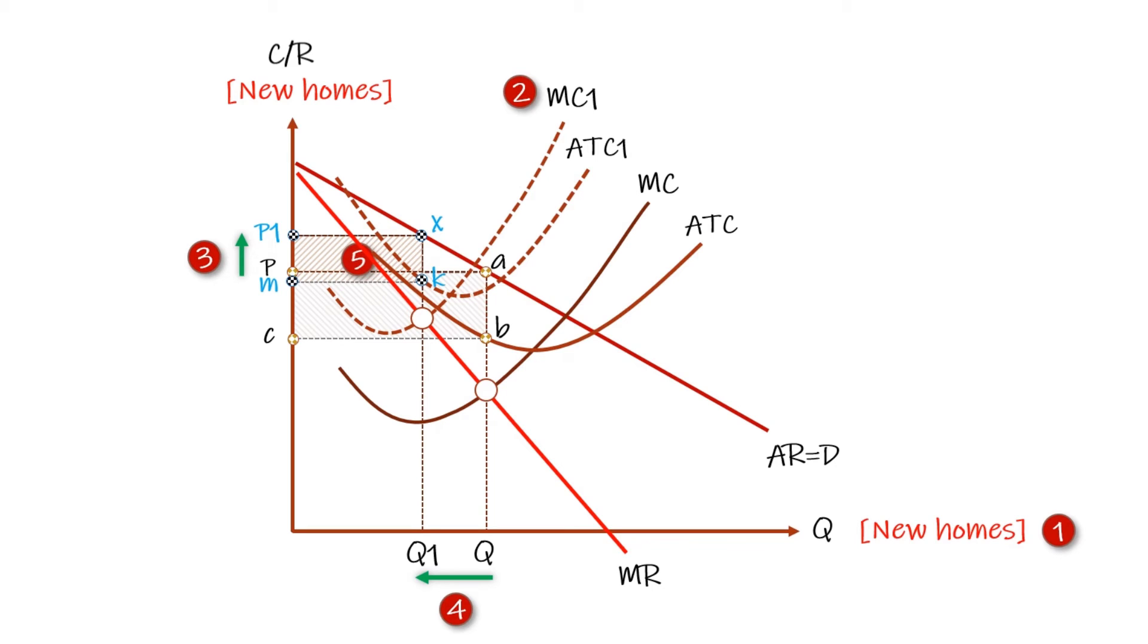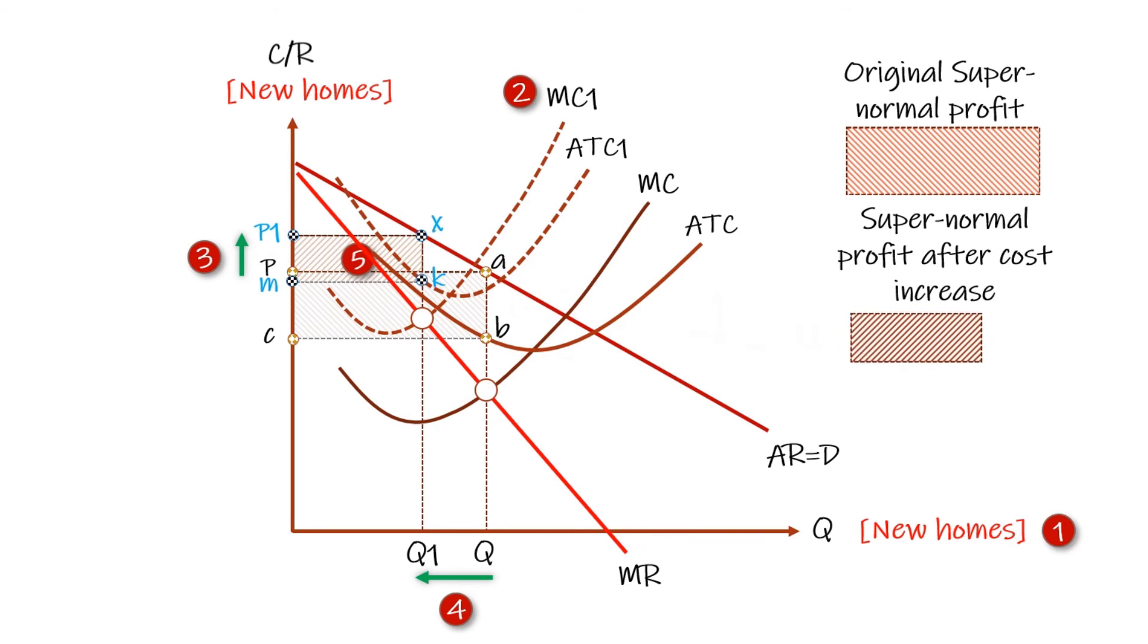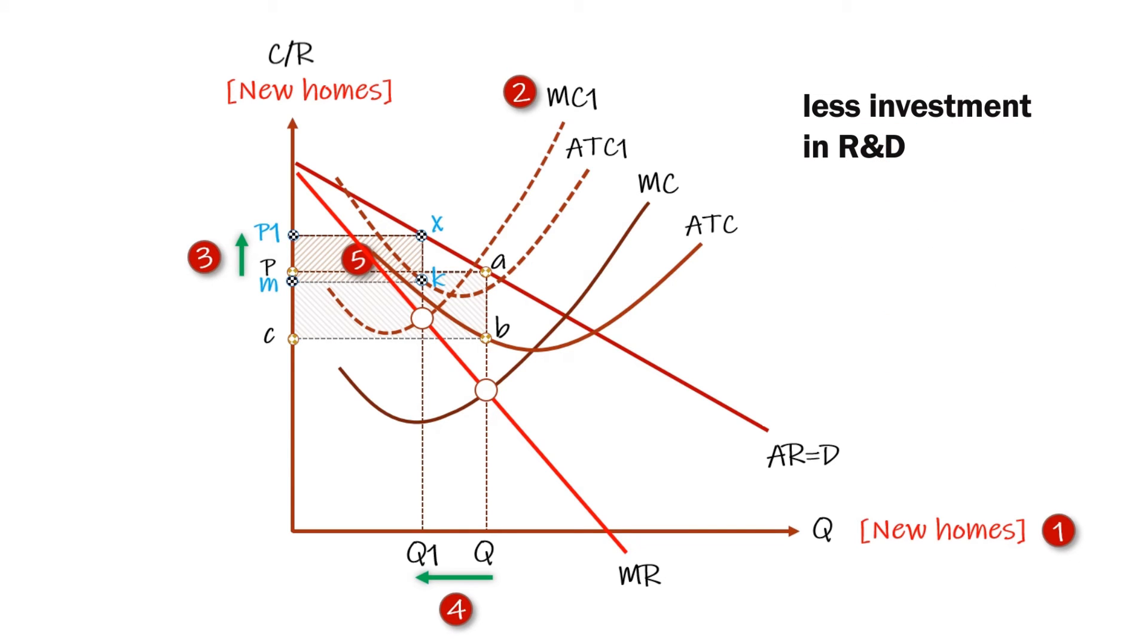They have clearly fallen to rectangle P1-X-K-M. This may reduce funds for R&D and investment in new technology, such as technology used in house design and construction.